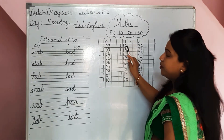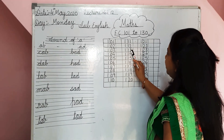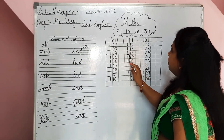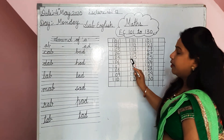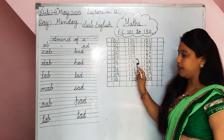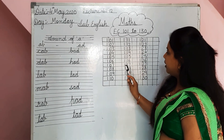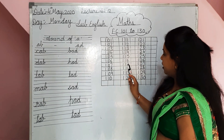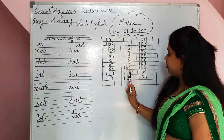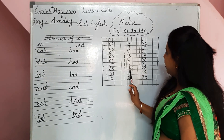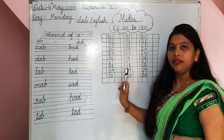And second line start will be from 111. 111, 112, 113, 114, 115, 116, 117, 118, 119, 120.